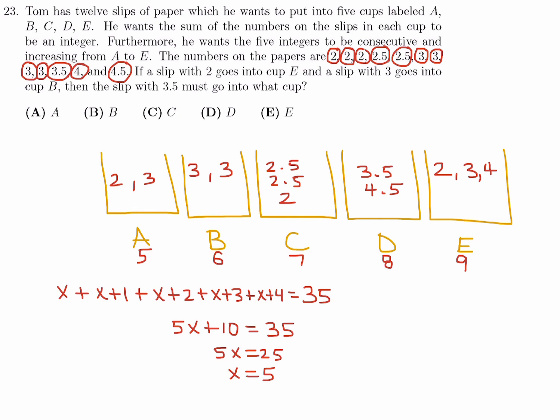So, now they're asking, the slip that the 3.5 went into, well, it's here, so it went into D. So, number 23, the answer is D.